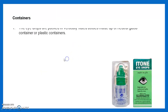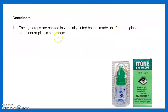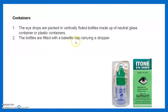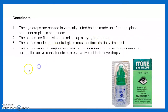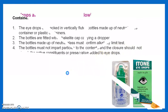Then we see the containers required for eye drops. Eye drops are packed in a vertically fluted bottle made of neutral glass or a plastic container. The bottles are fitted with a cap carrying a dropper. The bottle made of neutral glass must confirm the alkalinity limit test, and must not impart particles to contents; the closure should not absorb the active constituent or preservative.